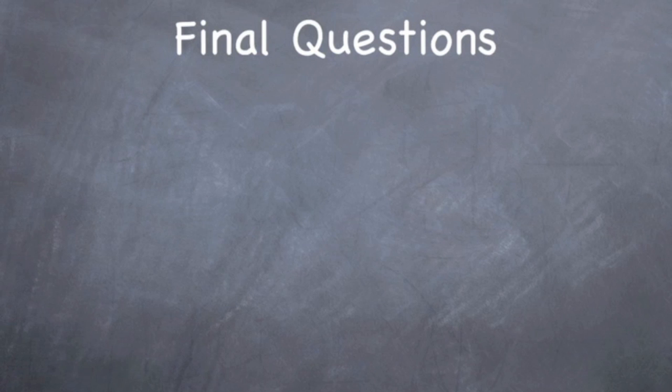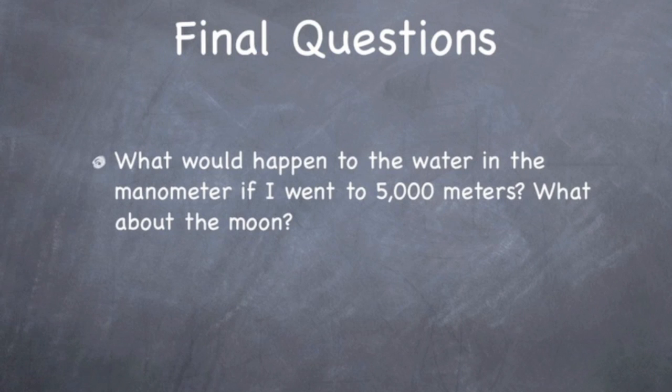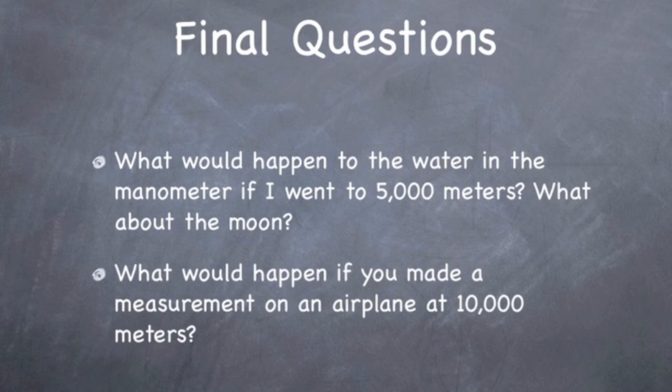Some final questions to think about based on what you've learned today. First, what would happen to the water in the manometer if I went to 5,000 meters? Or what about the moon? And second, what would happen if you made a measurement on an airplane at 10,000 meters? Think about these things as you think about pressure.